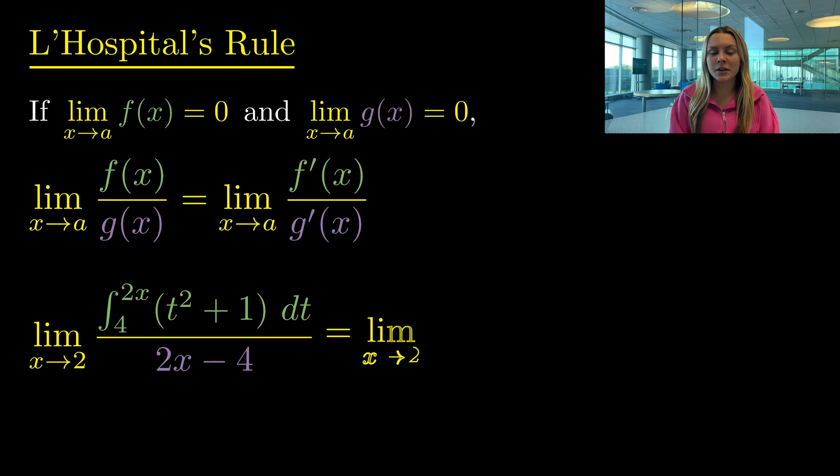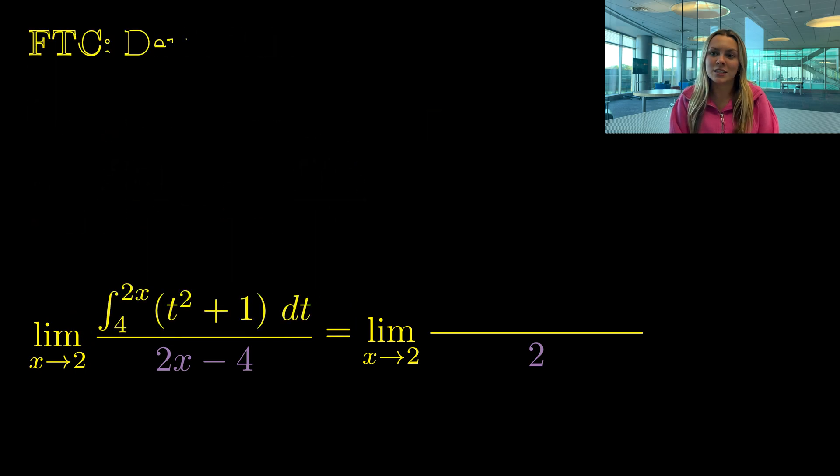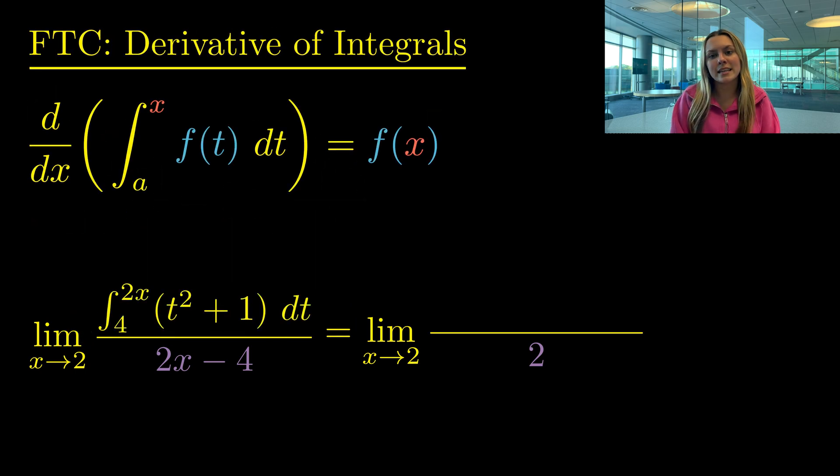Let's take the derivative of the denominator first, since the derivative of 2x minus 4 is just 2. And since our numerator is an integral, we have to use FTC to take its derivative. So like our previous examples, we will take our top limit of 2x and plug it into our function of t² plus 1. So we will have (2x)² plus 1, and don't forget to include these parentheses. And also don't forget to apply the chain rule, so we will multiply by 2 at the end of our derivative.